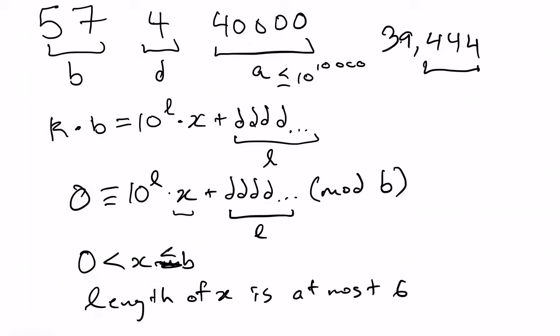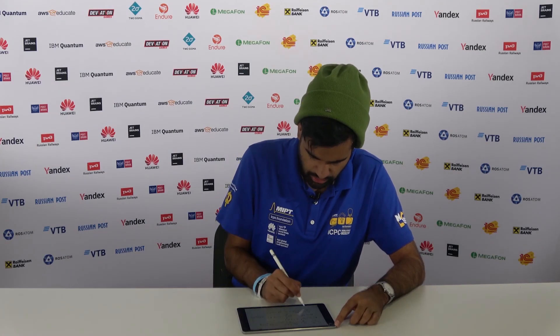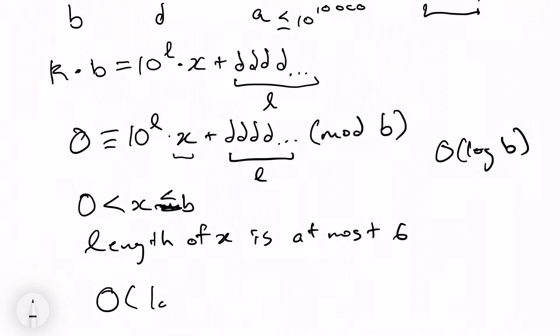So we set up this equation. We solve it using a modular inverse function in big O of log b time. And we can do this for every length. So the overall runtime is big O of the logarithm of a times the logarithm of b.